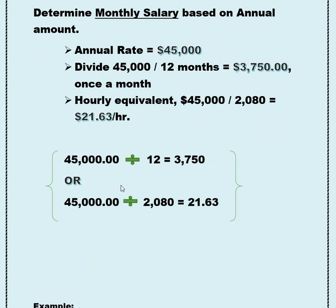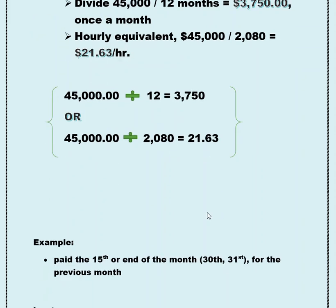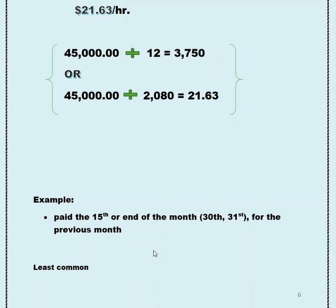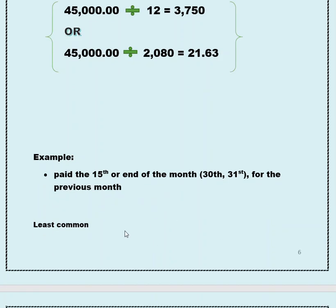Here's a simpler breakdown: take your $45,000, divide it by 12 months, and that gives you $3,750. Your hourly equivalent: take your $45,000, divide it by 2,080, and that gives you $21.63 an hour. An example of when this might be paid is the 15th of the month or the last day of the month — the 30th or 31st. It's usually for the previous month that you've worked, and this is probably the least common pay schedule you'll see.